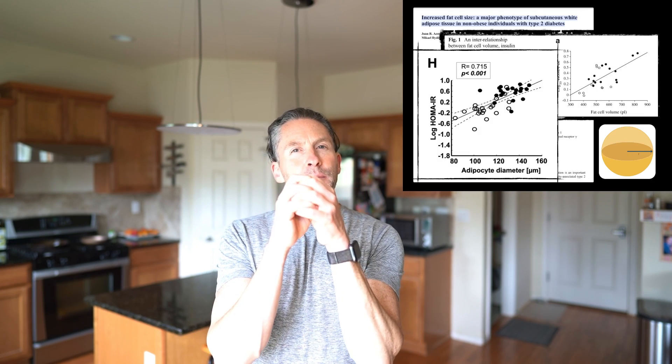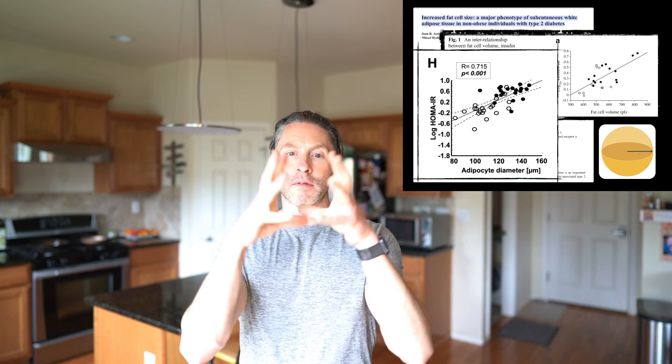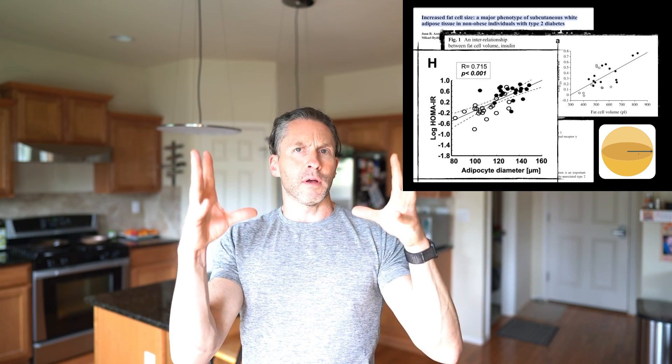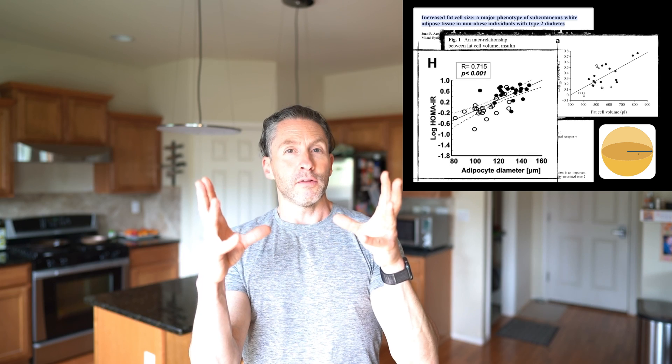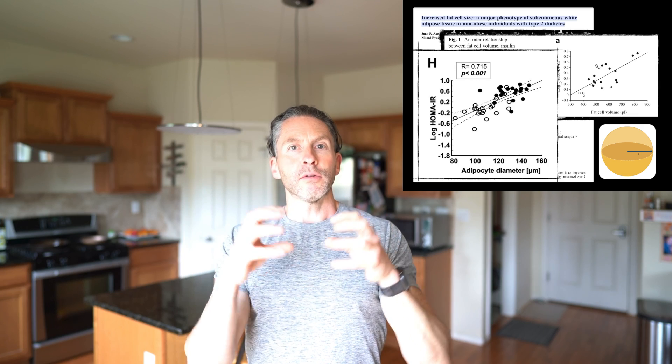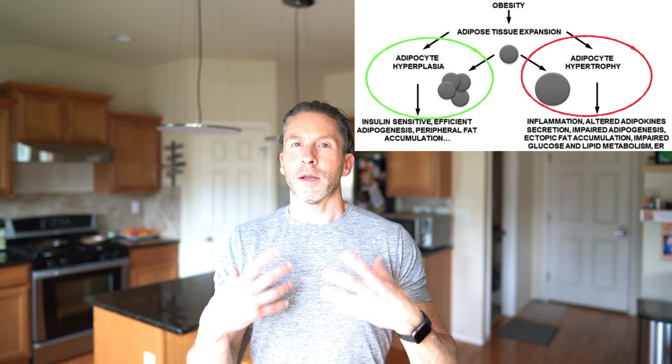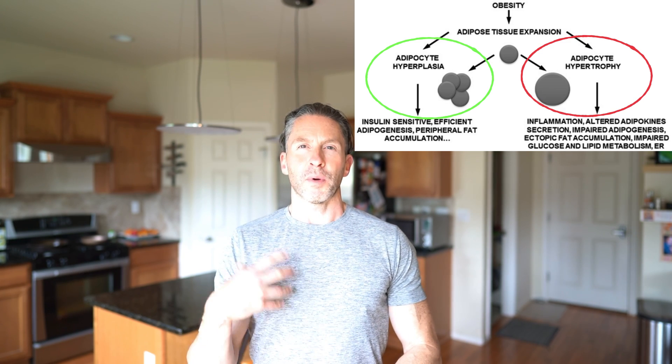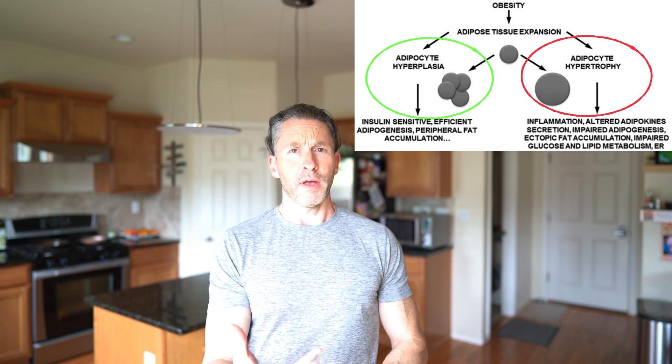Your fat cells can expand in size — maybe 20 microns in diameter at the smallest and 200 microns at the biggest. Since the volume of a sphere is the cube of the radius, you can expand a fat cell by maybe 4,000 times in volume. As your fat cells approach their maximum size, you signal your body to undergo adipocyte hyperplasia — sprouting new baby fat cells.